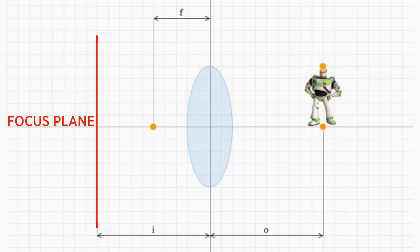The thin lens approximation says that any ray that passes through the center of the lens doesn't get bent at all. It remains straight. These are called medial rays.